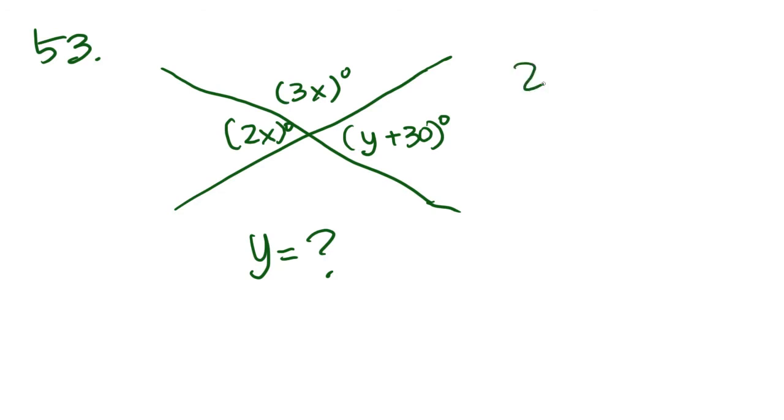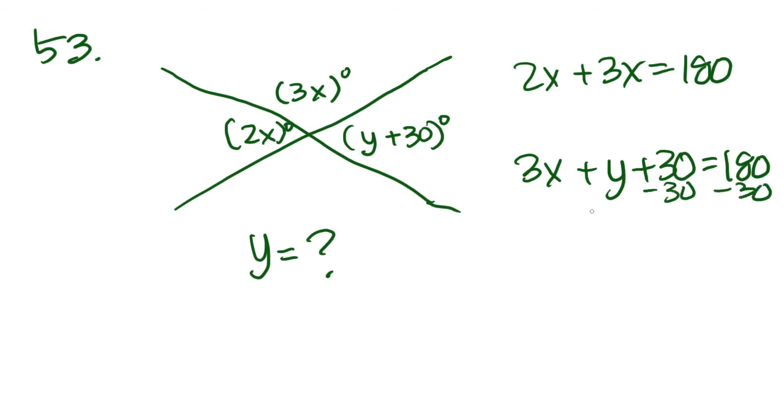So 2X plus 3X equals 180. And we also know that 3X plus Y plus 30 equals 180. Well, this one is pretty self-explanatory, so let's figure out the bottom one. Subtract 30 from both sides, and you get Y plus 3X equals 150.